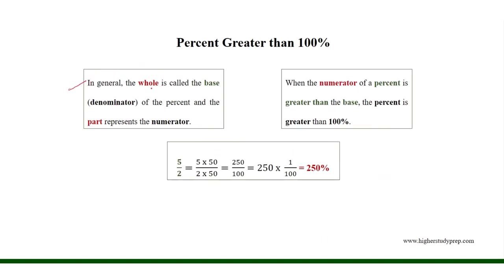In general, the whole is called the base or denominator of the percent equivalent, and the part represents the numerator. When the numerator of a percent is greater than the base, the percent is greater than 100%.